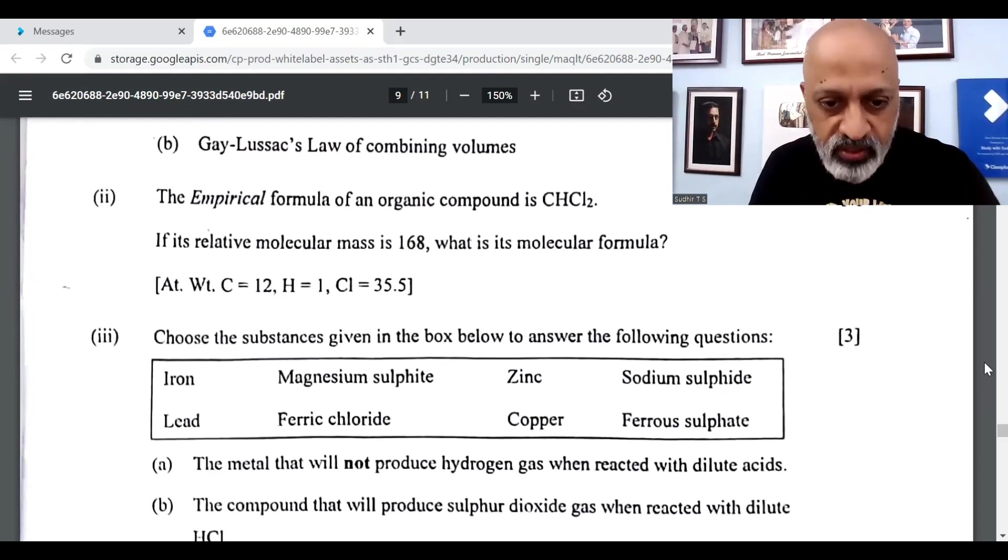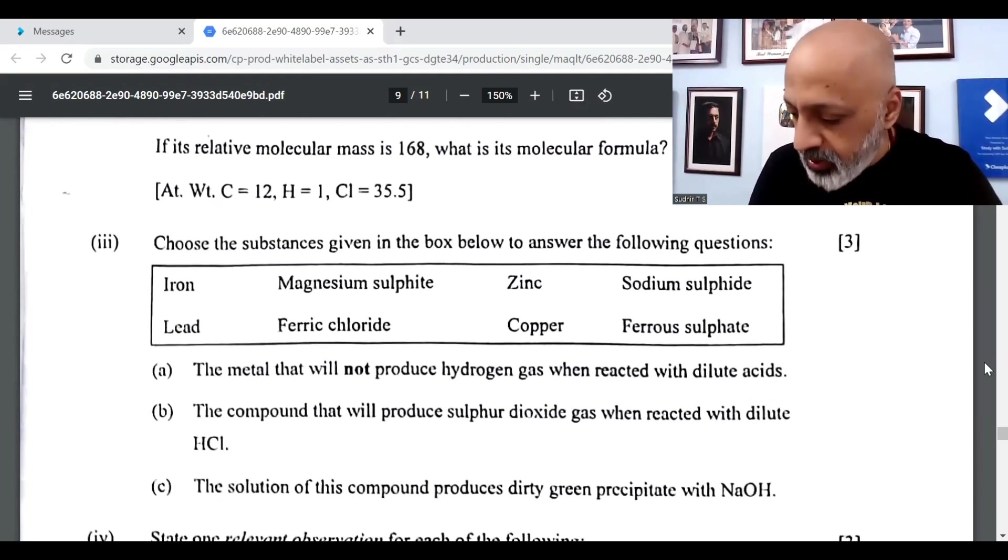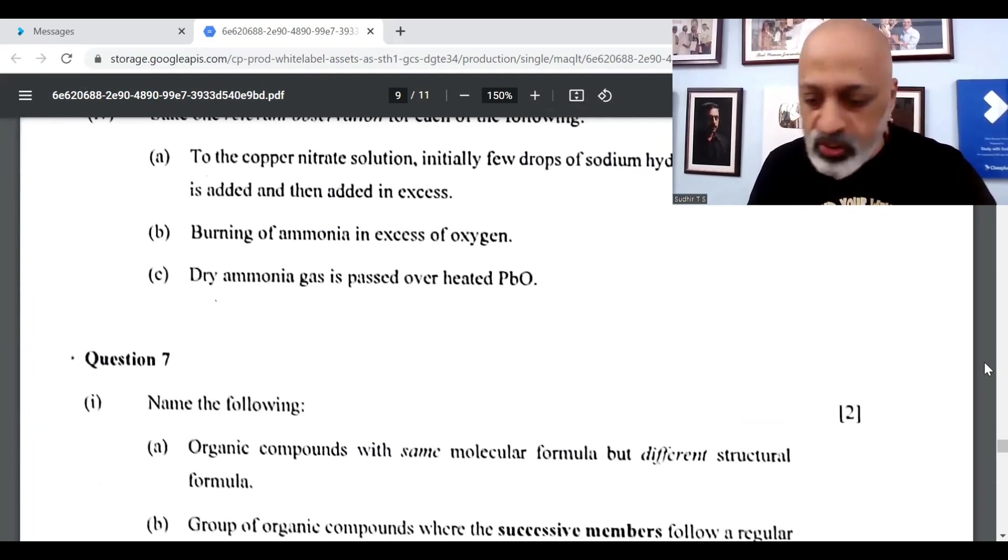Then the first answer, 3rd A, is copper or lead. The second one is magnesium sulfite. The third one is ferrous sulfate. Then you have an observation question.